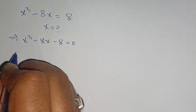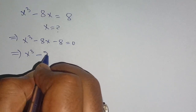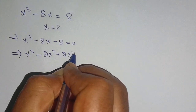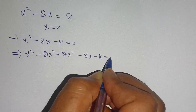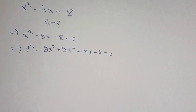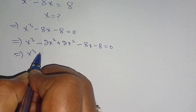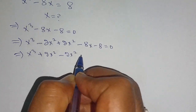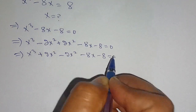Now in the next step we can rewrite it as x cubed minus 2x squared plus 2x squared minus 8x minus 8 is equal to 0, as it doesn't impact our previous equation. Now we can rewrite it as x cubed plus 2x squared minus 2x squared minus 8x minus 8 is equal to 0.